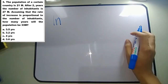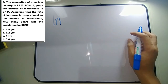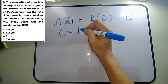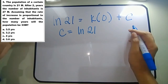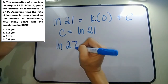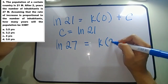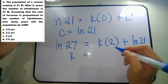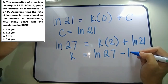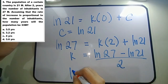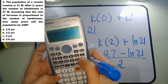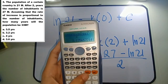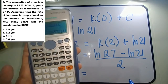Using the first condition, ln(21) equals k times 0 plus c, so c equals ln(21). Using the second condition at time 2 years, ln(27) equals k times 2 plus ln(21). Therefore k equals (ln27 minus ln21) over 2, which equals approximately 0.12566. It is advised to store this value in your calculator for an accurate answer.